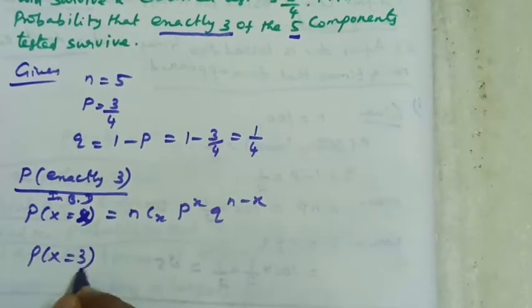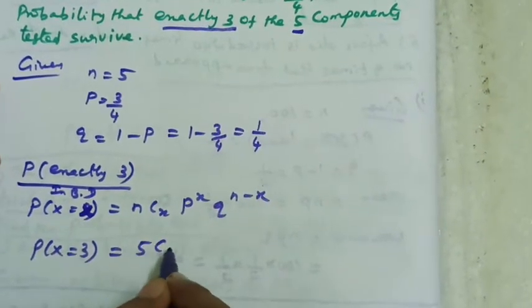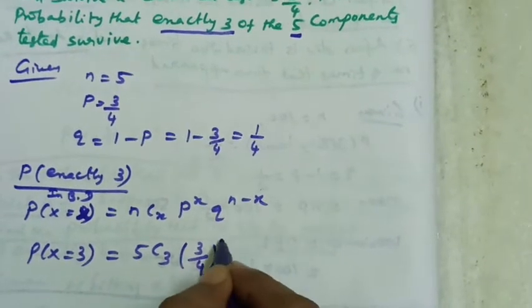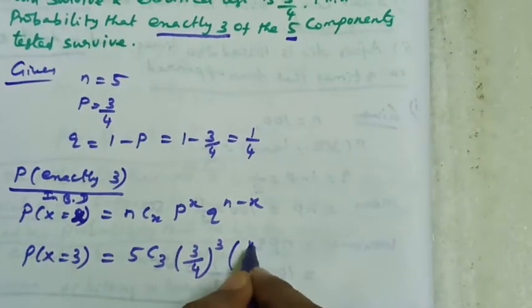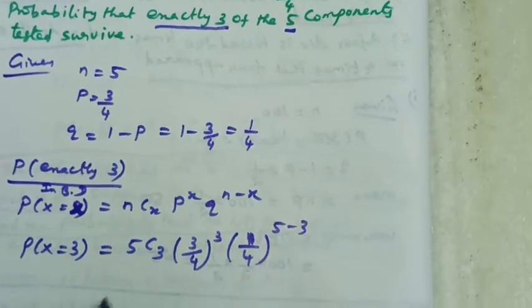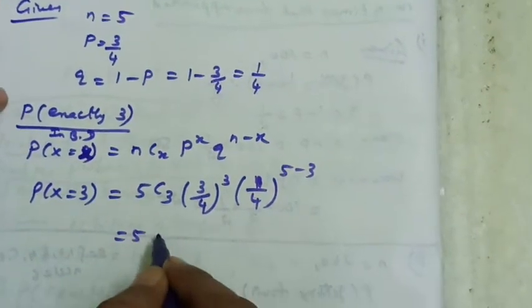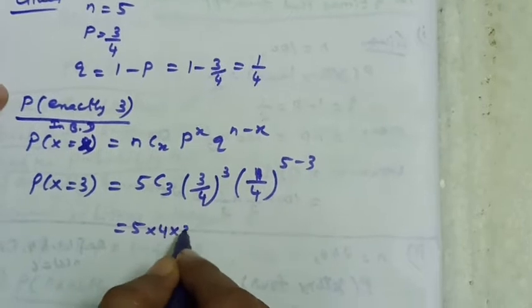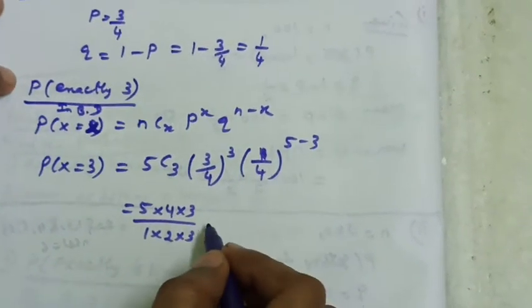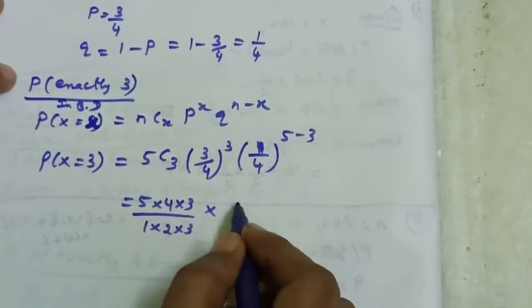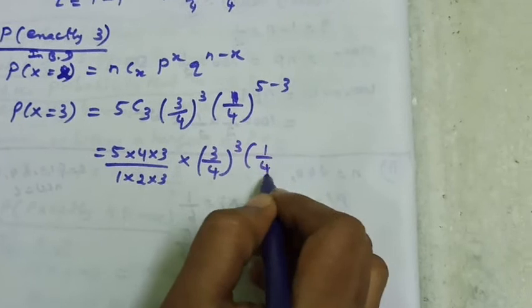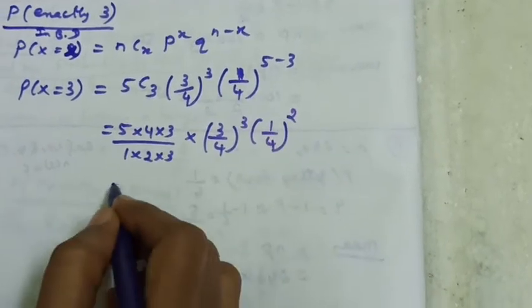P of X equal to 3 is 5C3 · (3/4)^3 · (1/4)^(5−3). That is 5C3, which equals 5×4×3 divided by 1×2×3, multiplied by (3/4)^3 and (1/4)^2.